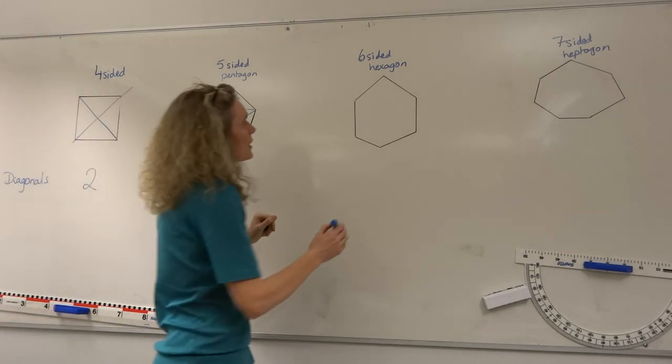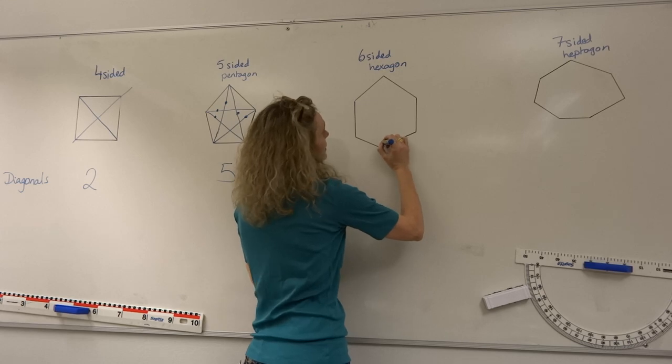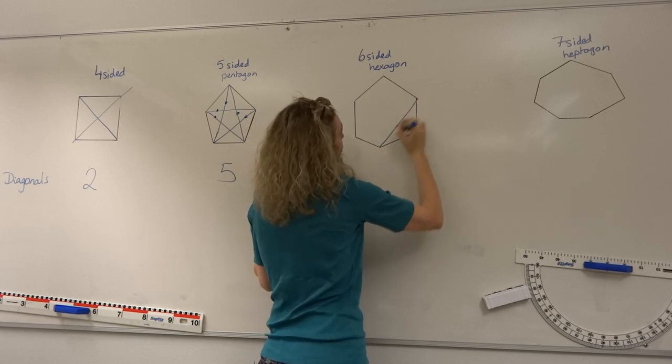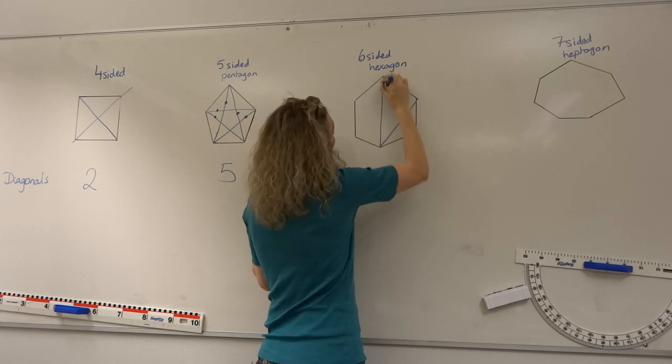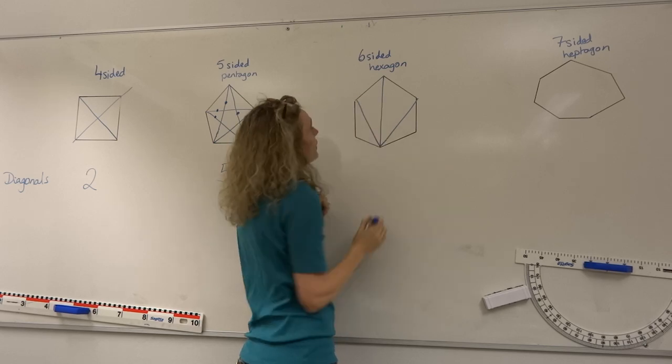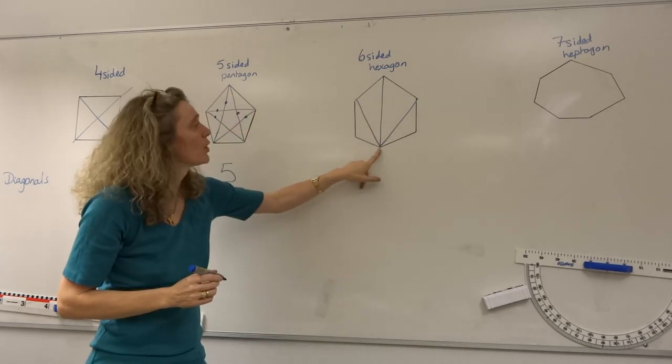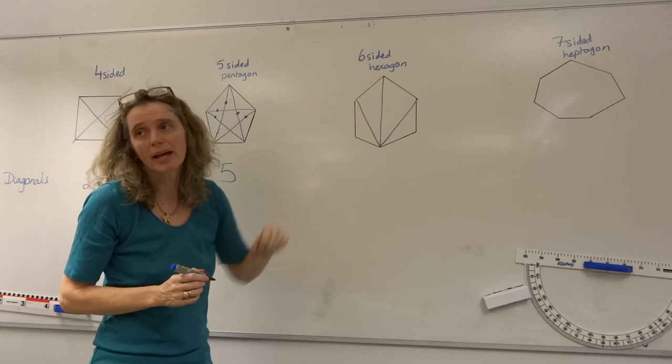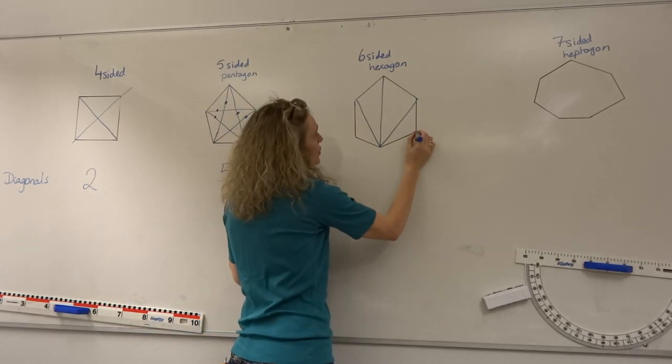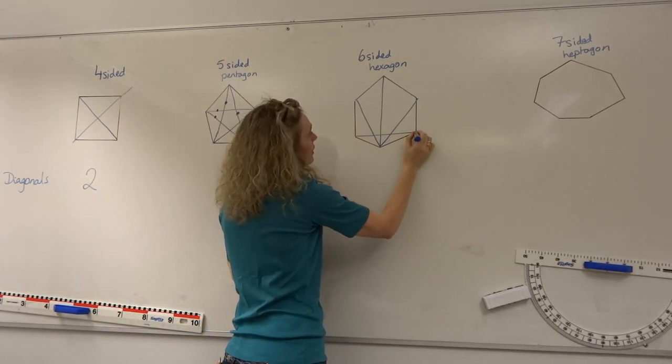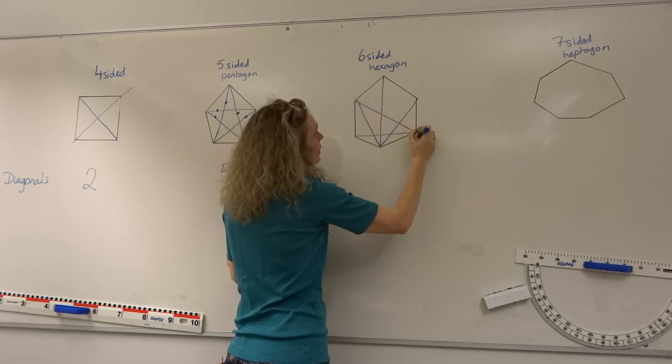And then we've got a hexagon then. Well, a hexagon has three opposite corners that it can connect to, which means that from every corner we should have three diagonals coming out of it. So let's do that. One, two, three.